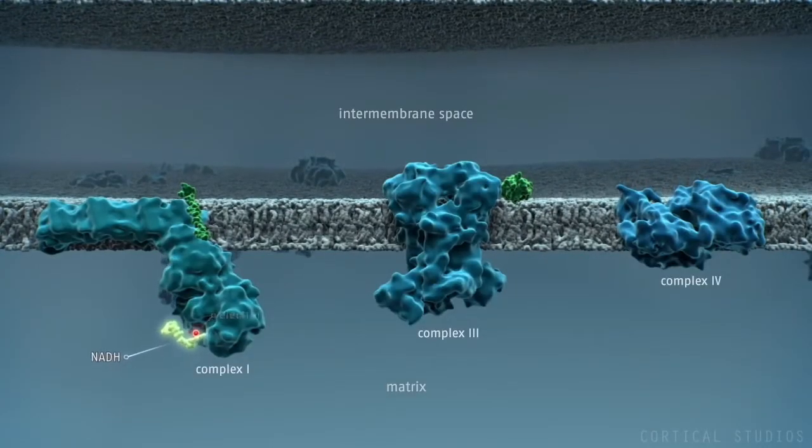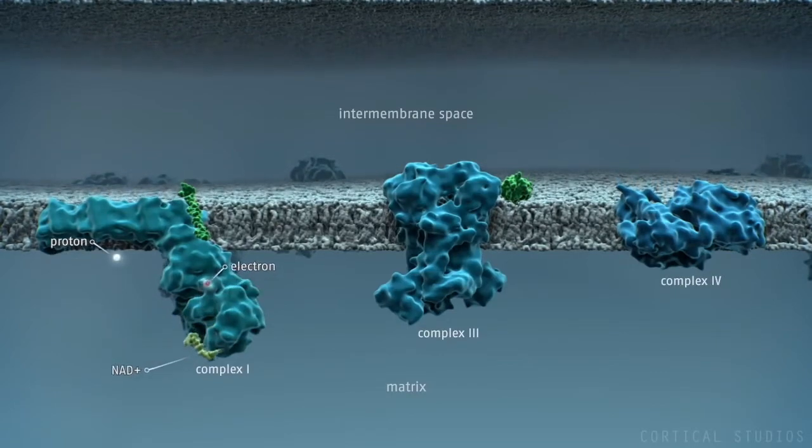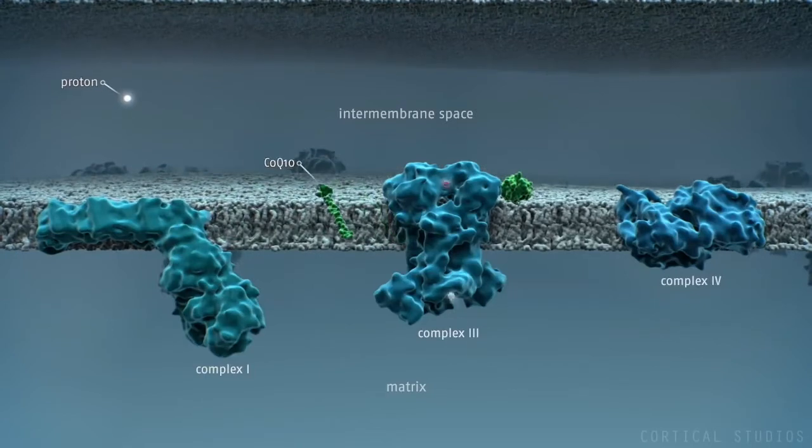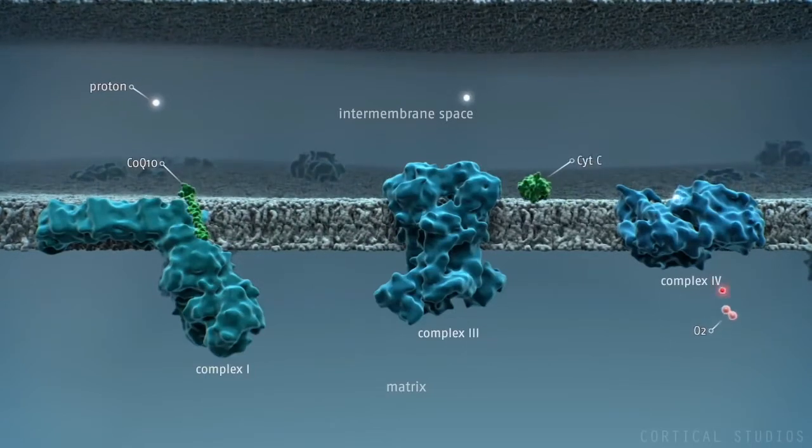Nutrients provide high energy electrons in the form of NADH, which are used by the protein complexes to pump protons from the matrix to the intermembrane space.